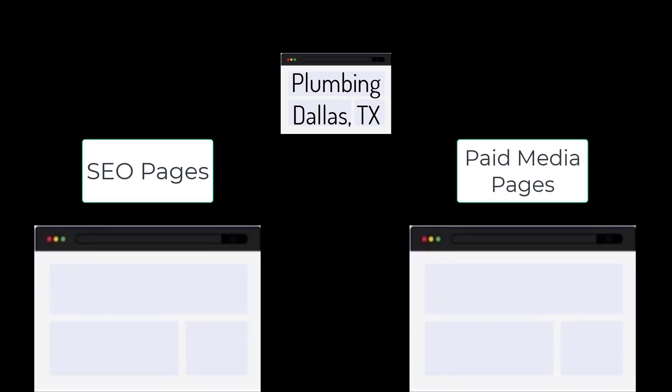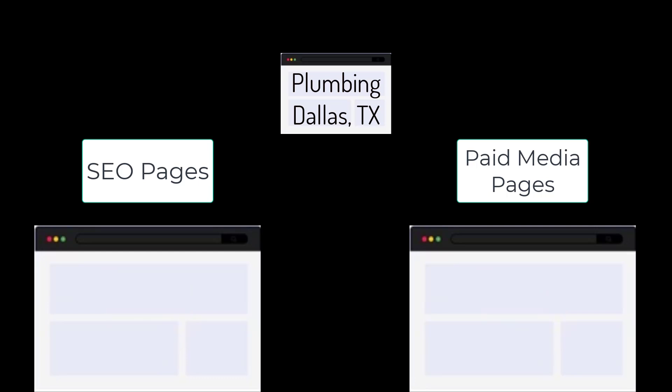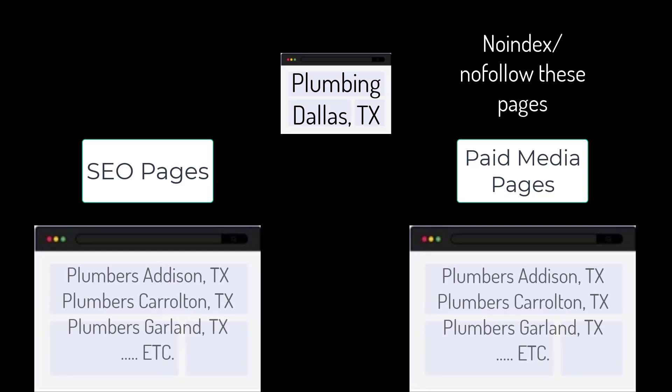For paid advertising, we may have a single concept we want traffic for — like plumbing in Dallas, Texas — but in this broad category we will have different landing pages for paid media and SEO, such as emergency plumbers Dallas Texas, 24/7 plumbers Dallas Texas, plumbing contractors Dallas Texas. And even this can be broken into different regions.